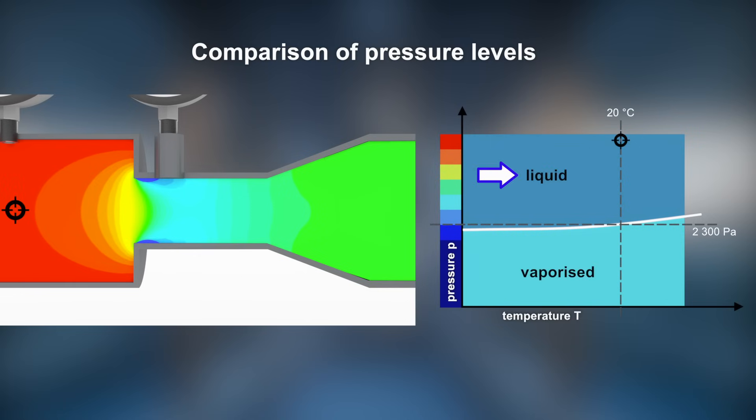Upstream of a restriction, the static pressure is well above a vapor pressure. The static pressure in the flow decreases as the flow reaches the narrow pipe section. In our example, the pressure at the exposed edge is below the vapor pressure. Consequently, water evaporates and cavitation bubbles are formed.